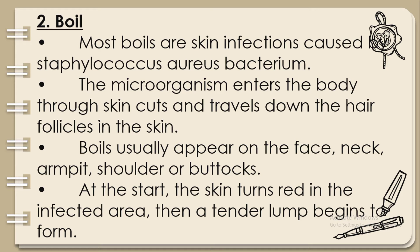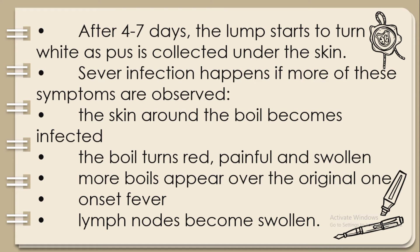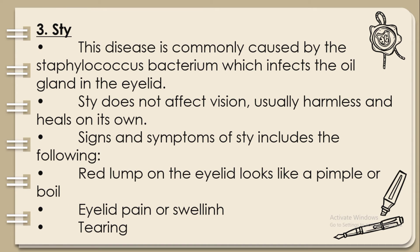Boils usually appear on the face, neck, armpit, shoulder, or buttocks. Initially the skin turns red in the infected area, then a tender lump begins to form. After four to seven days the lump starts to turn white as pus collects under the skin. Severe infection occurs when the skin around the boil becomes infected, turns red, painful and swollen, more boils appear, fever develops, and lymph nodes become swollen.